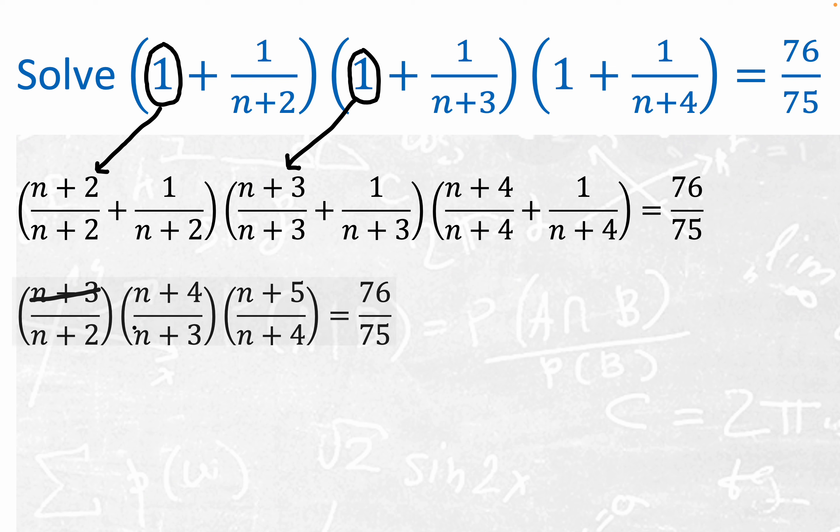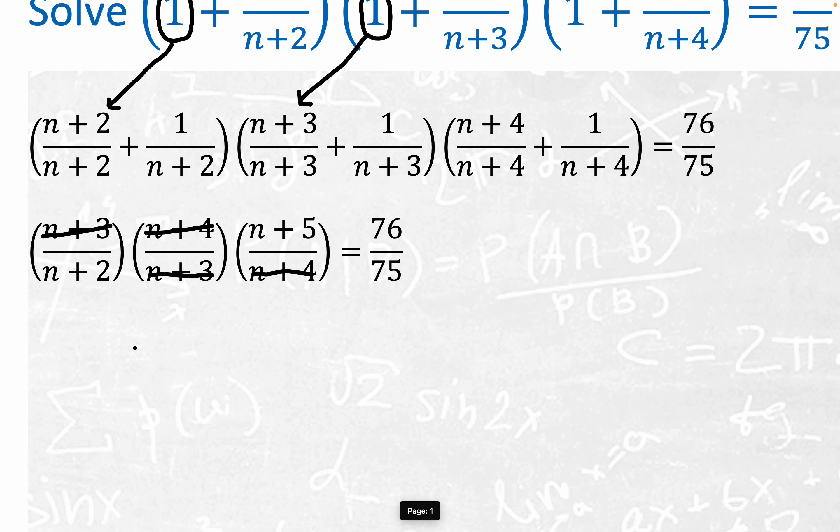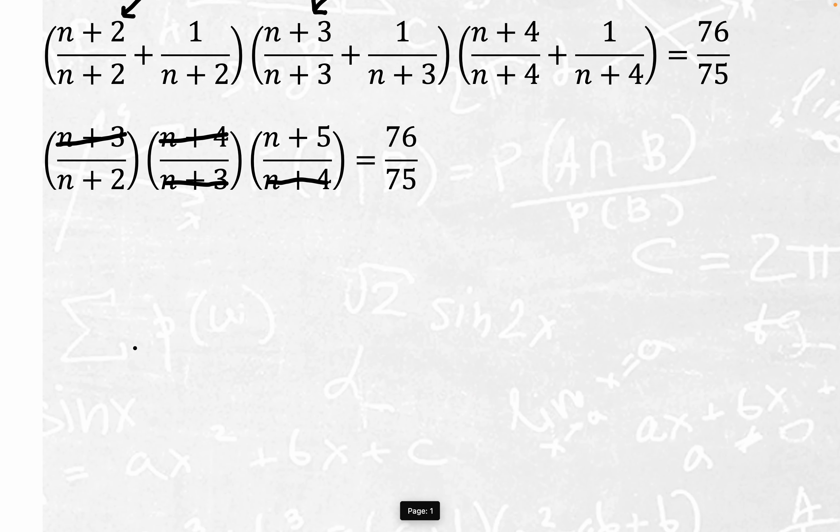n plus 3 will cancel with this n plus 4, and then this n plus 4 will cancel with this n plus 4 because n plus 4 over n plus 4 is just 1, and so we can cancel out if there's just 1's in there, and we're just left with a pretty manageable expression right here.